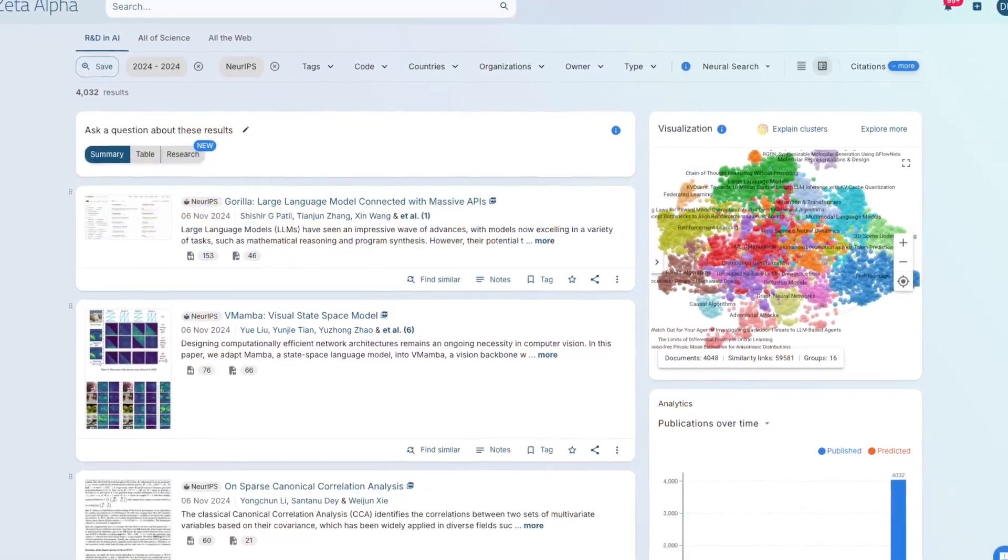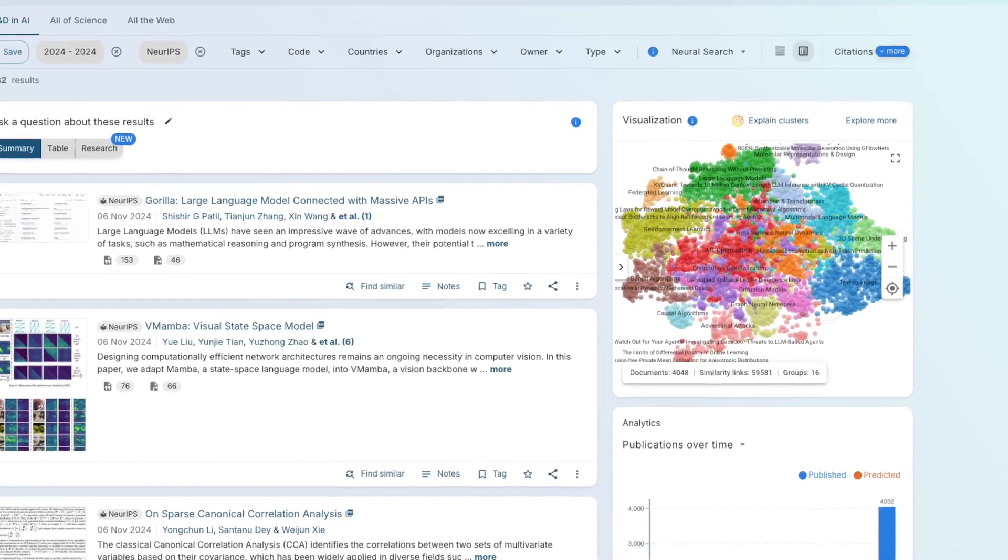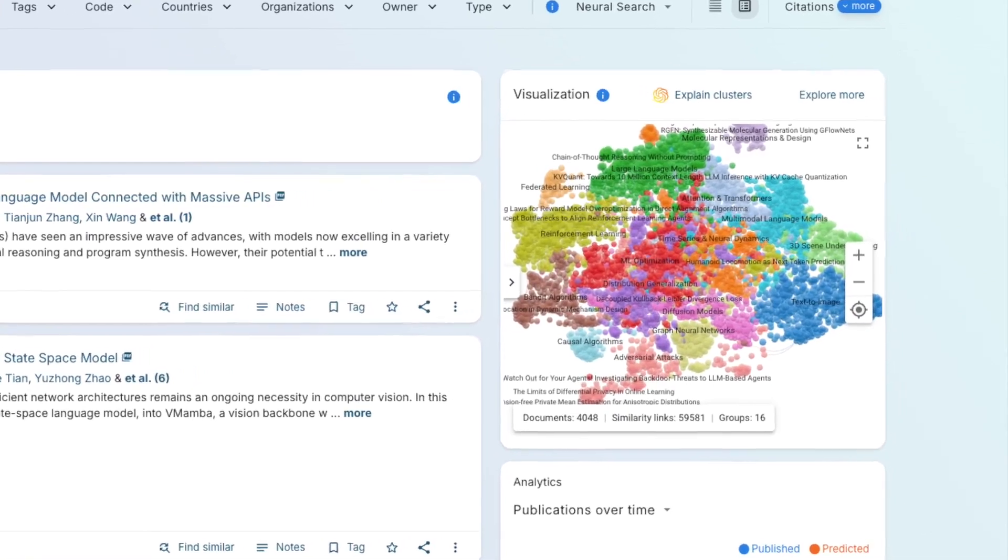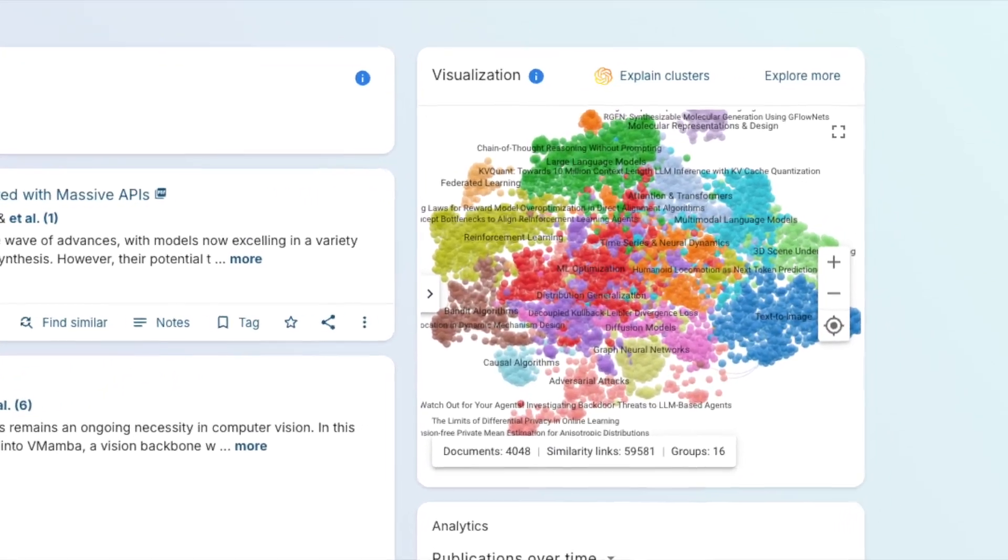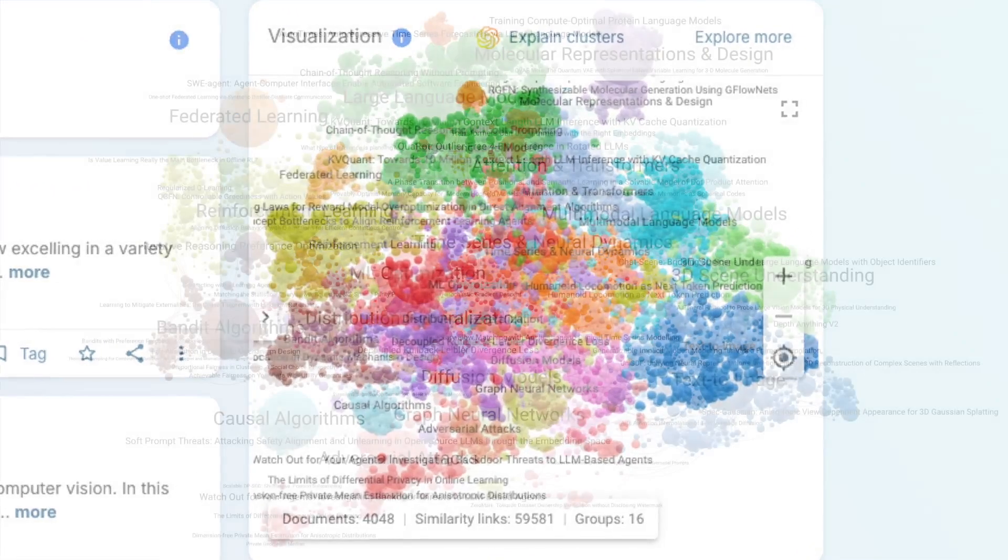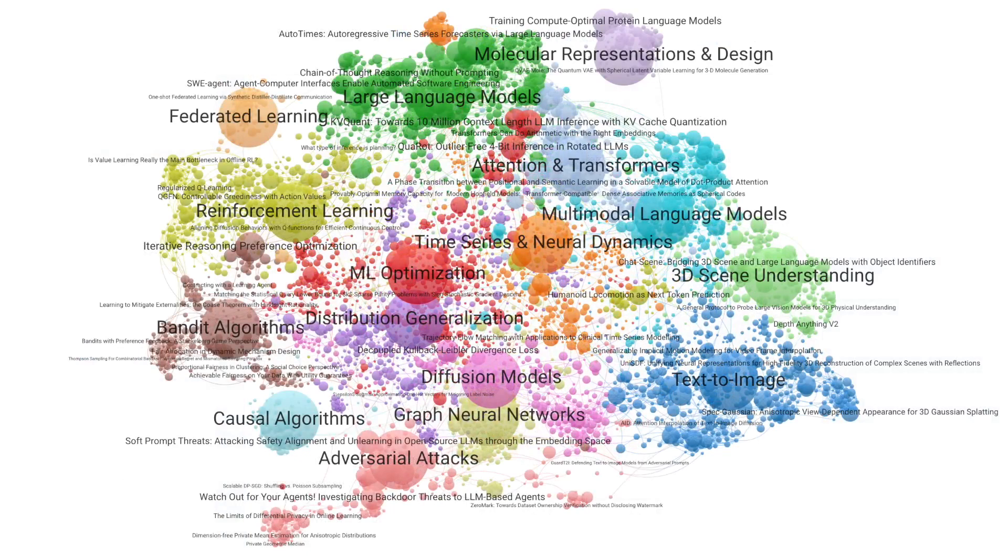Zeta Alpha's neural discovery platform was used to turn weeks of research on NeurIPS into hours. Stay until the end of the video to get a behind-the-scenes look at how we created this overview. Welcome back to our annual NeurIPS guide. In this video, we're diving into some of the most noteworthy and impactful papers from this year's conference, giving you a front-row seat to the latest developments in AI.